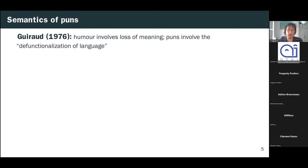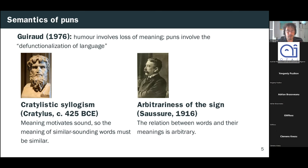There's been some other work on the semantics of puns. So Pierre Guiho, for example, discusses loss of meaning as a feature of humor and observes what he calls the defunctionalization of language in puns. And using the generalized theory of verbal humor as a framework, more recent studies have identified the logical mechanism of puns as something called Crabillistic syllogism. And this fancy sounding term basically just means that if meaning motivates sound, then the meaning of similar sounding words must also be similar. Now, this line of reasoning is an example of the faulty logic underpinning much humor. And that's because Crabillism is completely at odds with the canonical assumption of conventional linguistics that the relationship between words and their meanings is arbitrary and specific to a particular language.